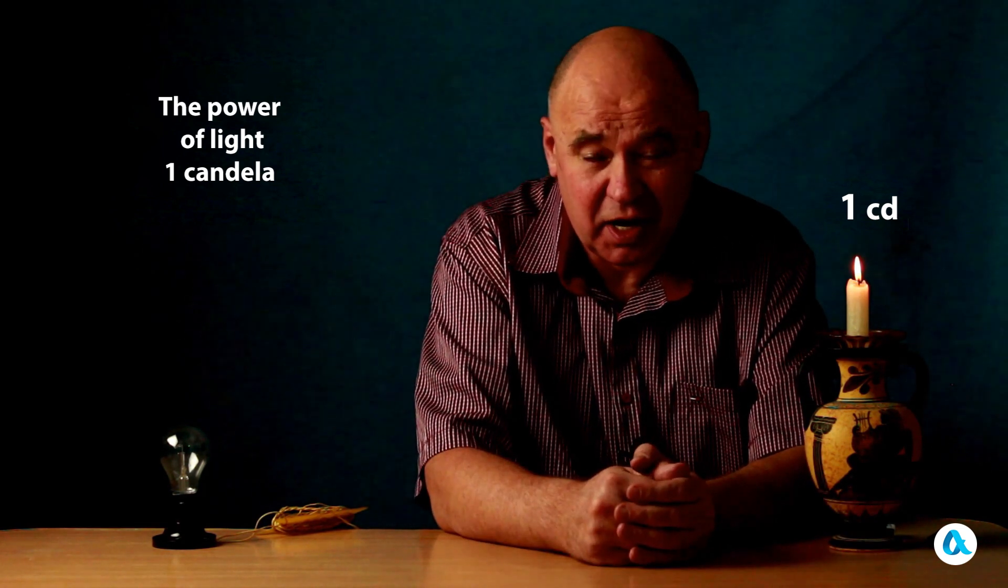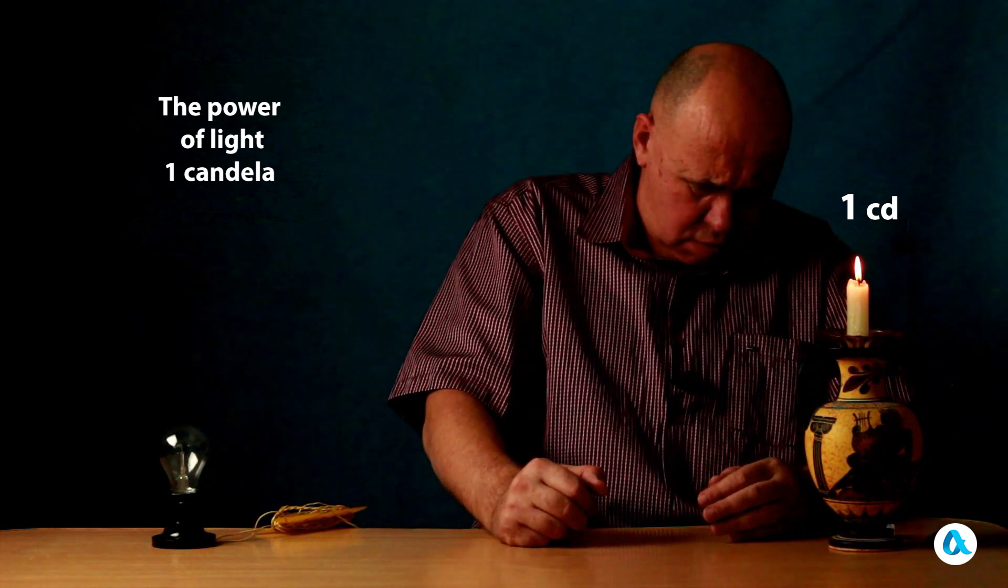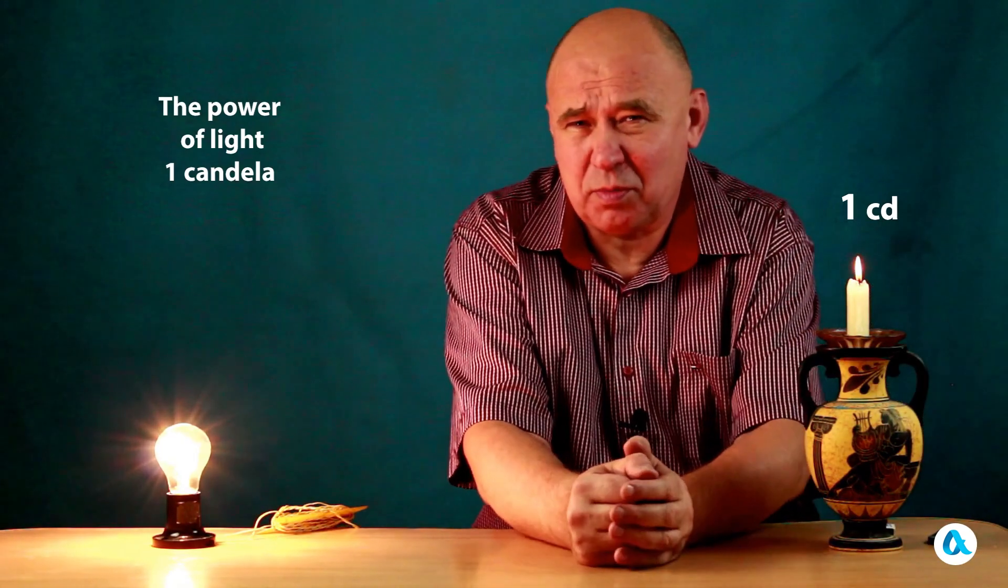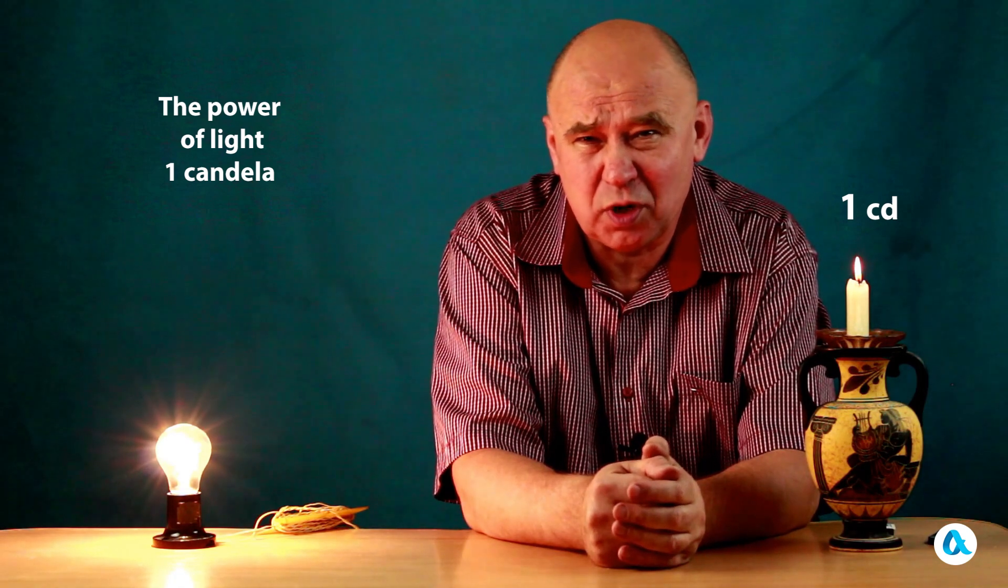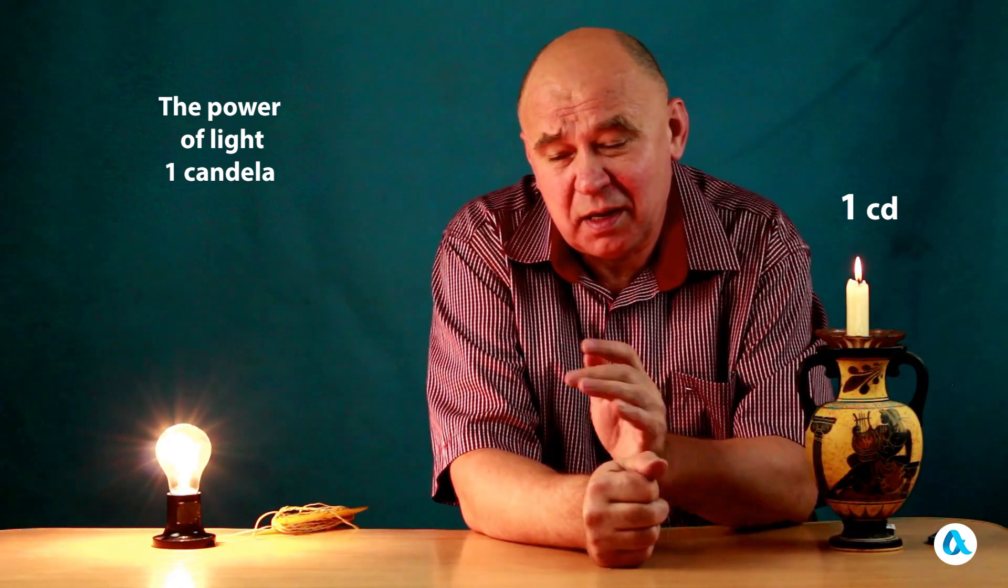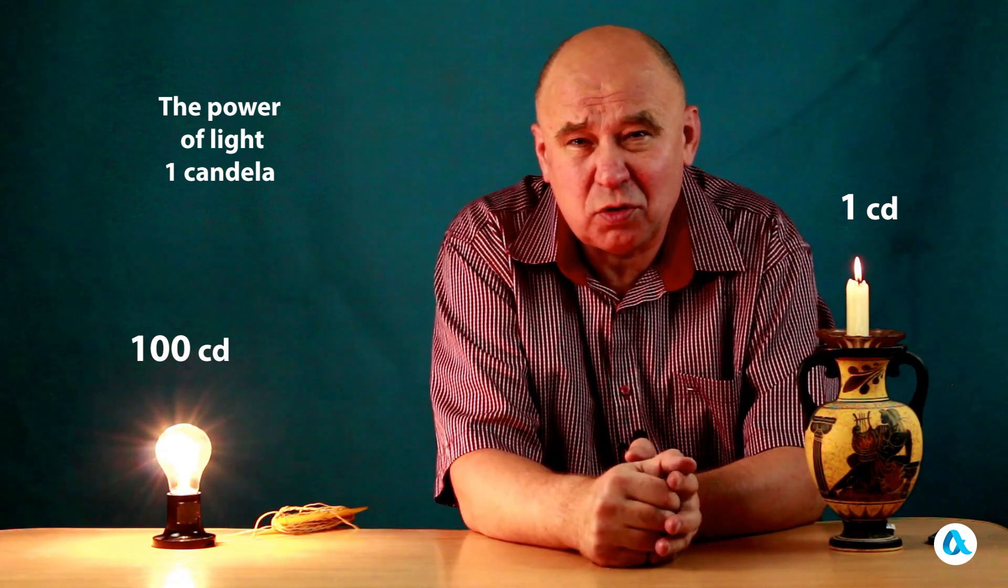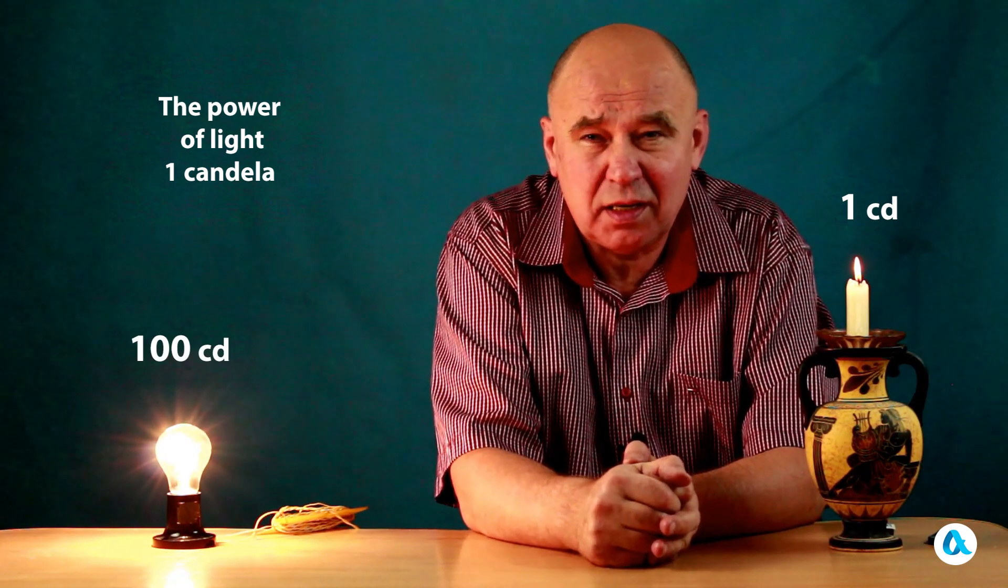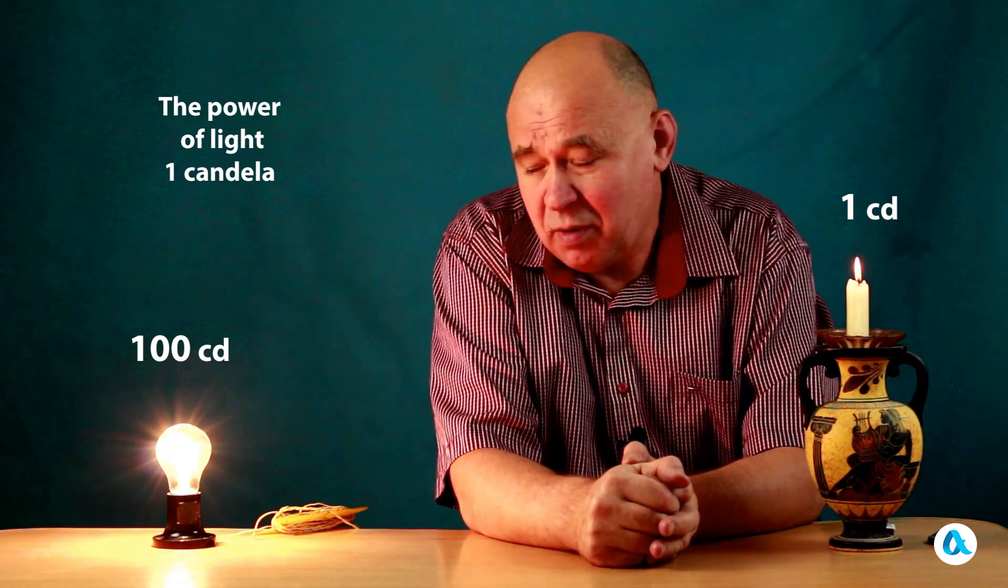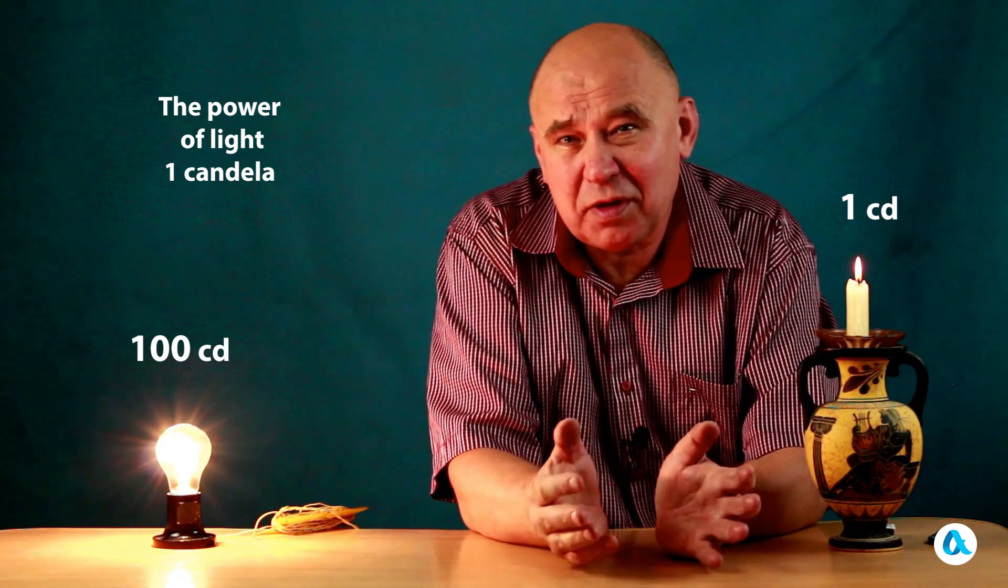At this moment, I will also proceed to turn on an electric light bulb for illumination purposes. This is a lamp that uses 100 watts of power and emits light through incandescence. The light output of this lamp is 100 times greater than the light output of a single candle, making it significantly brighter. A solitary light bulb has the capacity to replace 100 candles, thereby offering a more efficient lighting solution.